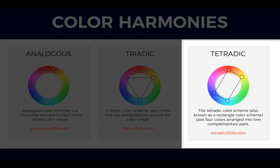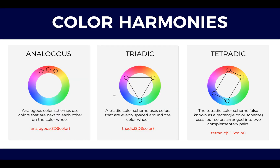Tetradic. The tetradic color scheme, also known as a rectangle color scheme, uses four colors arranged into two complementary pairs. This rich color scheme offers plenty of possibilities for variation. Tetradic color scheme works best if you let one color be dominant. You also should pay attention to the balance between warm and cool colors in your design. And you can see that for each color scheme I added a line of code at the bottom.